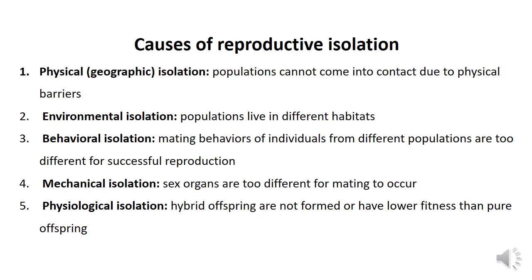Further causes of reproductive isolation include: behavioral isolation, where mating behavior of individuals in different populations is too different for successful reproduction; mechanical isolation, where sex organs are too different for mating to occur; and physiological isolation, where hybrid offspring are not formed or have lower fitness than pure offspring. In short, reproductive isolation is the inability of species to breed successfully with related species due to geographical, behavioral, physiological, or genetic barriers.